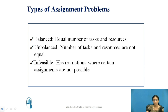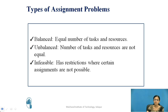There are different types of assignment problems. The first is the balanced assignment problem, where there is an equal number of tasks and resources. The second is the unbalanced assignment problem, where the number of tasks and resources are not equal. The third is the infeasible assignment problem, which has restrictions where certain assignments are not possible — for example, a resource may be available but lacks the needed expertise for a particular job.